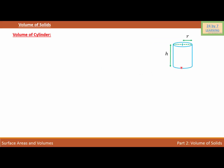Volume of cylinder. In order to find the volume of a cylinder, let's draw a cylinder. So this is my cylinder. As you can see, the radius of the cylinder is r and the height of the cylinder is h. Then the volume of a cylinder is given as V = πr²h.